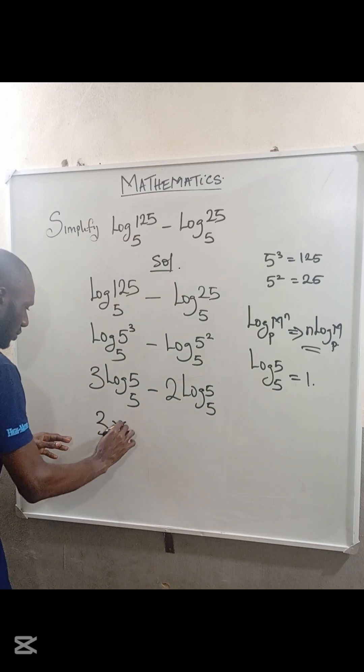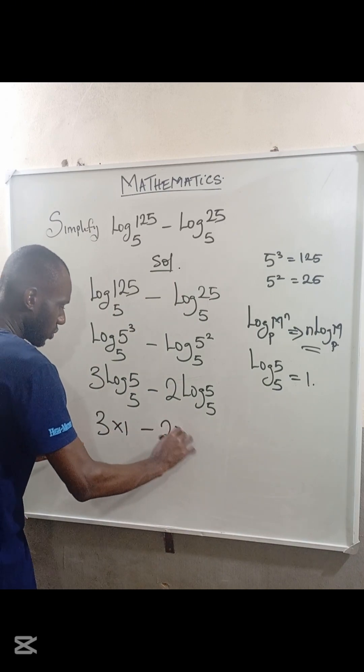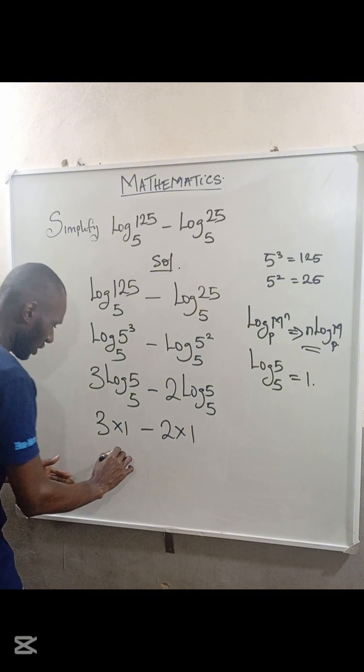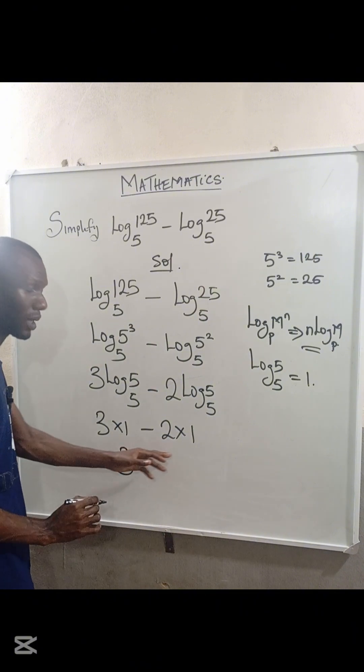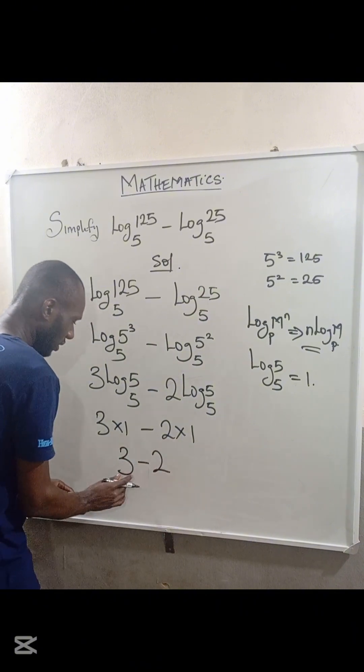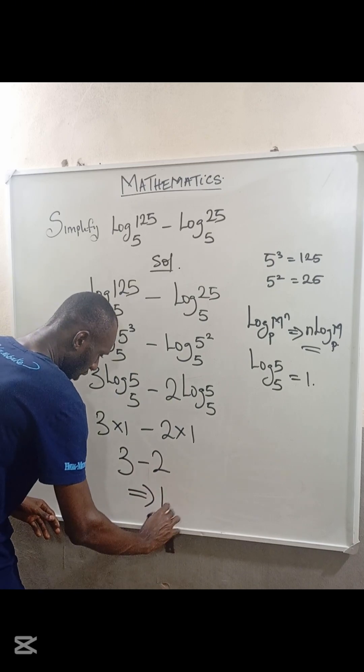This becomes 3 times 1 minus 2 times 1. So 3 times 1 is 3, minus 2 times 1 is 2, and 3 minus 2 equals 1.